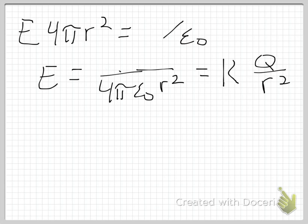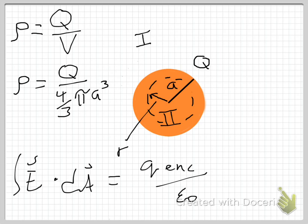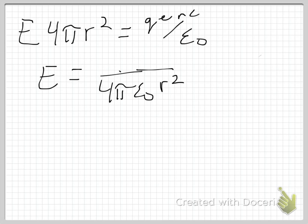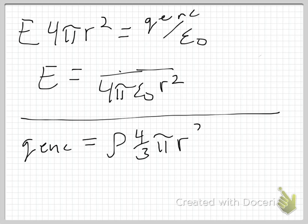So all of these steps are basically the same with one exception. This is now Q enclosed. Notice, and forgive the handwriting, but notice I have not enclosed the entire charge Q. I've only enclosed part of it. So I need to figure out how much of that charge I've enclosed. That is where my volume charge density comes in handy. So let me just go down here and show you how to determine that. Q enclosed is going to be equal to my volume charge density times whatever volume I'm enclosing. In this case that's 4/3 pi r cubed. r is again the radius of my Gaussian sphere. Rho times 4/3 pi r cubed, that is the charge which I'm enclosing.